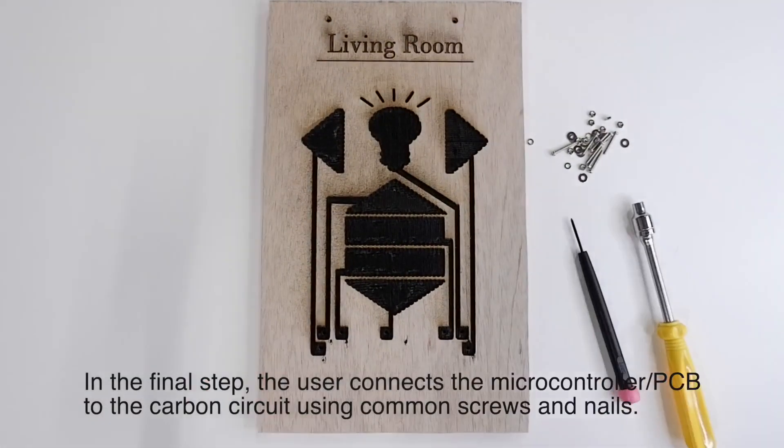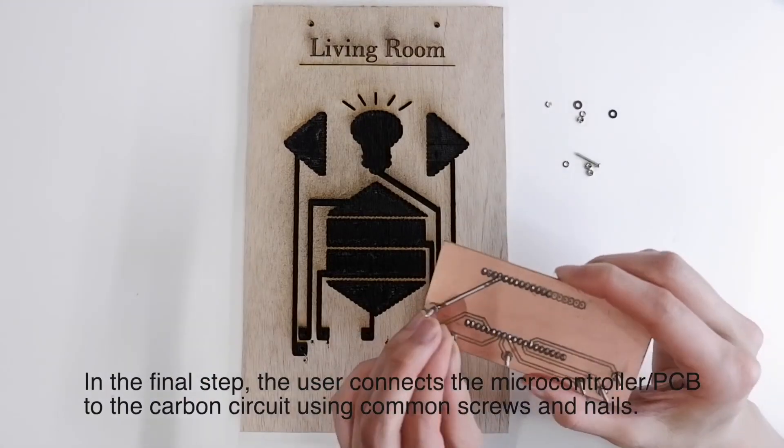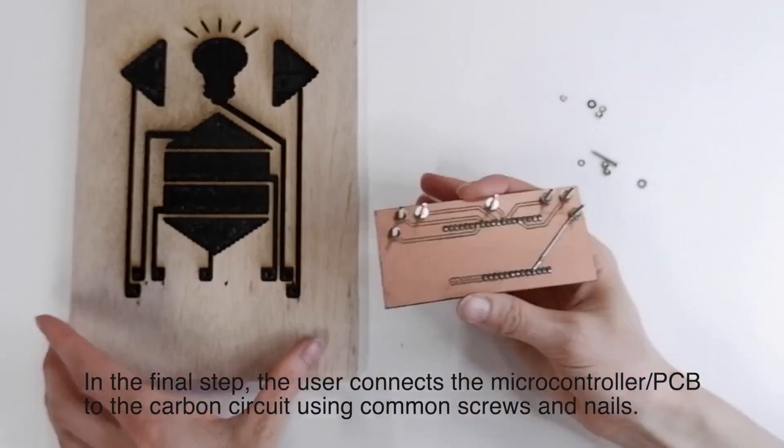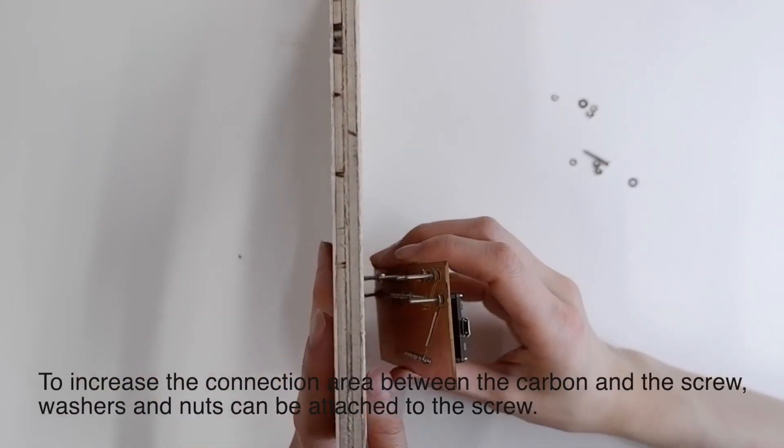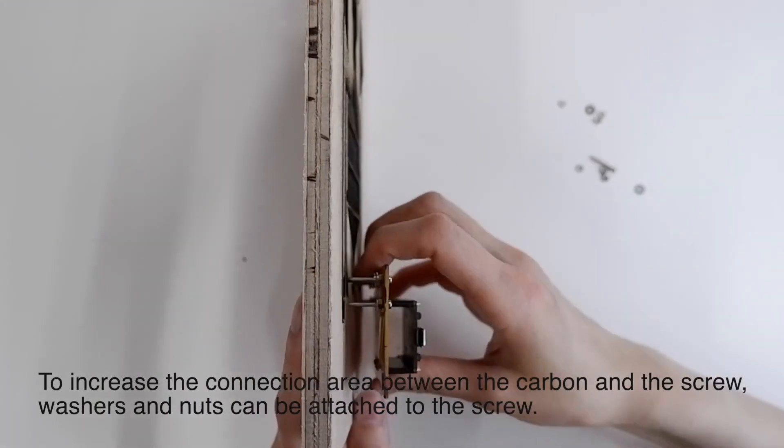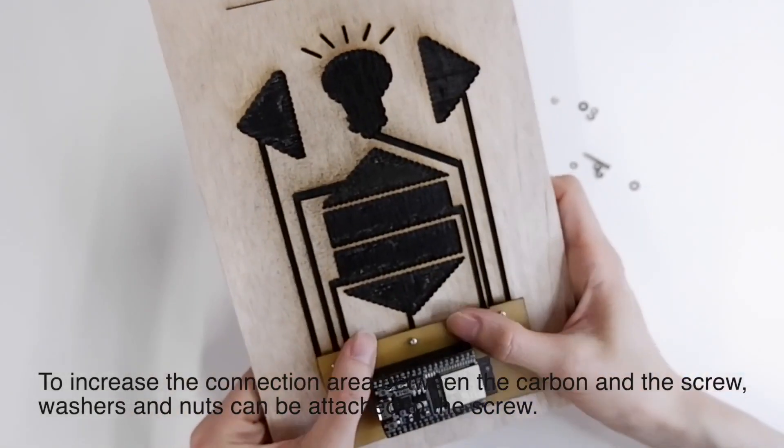In the final step, the user connects the microcontroller or PCB to the carbon circuit using common screws and nails. To increase the connection area between the carbon and the screw, washers and nuts can be attached to the screw.